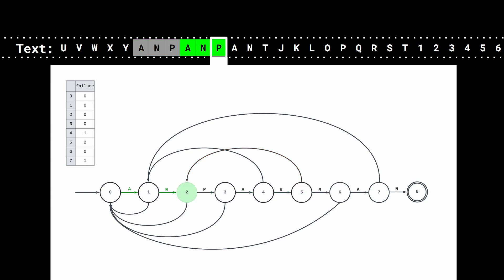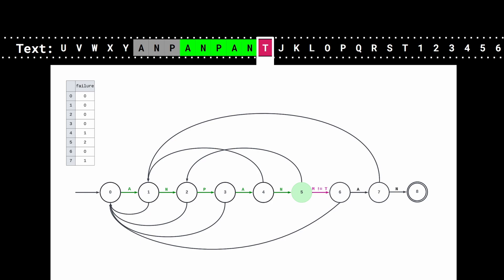Now in state 2, when we read a P, we go to state 3. We continue reading the text — we have the letters A and N, so we are back in state 5. But now we read a T. The comparison fails, so we follow the failure link. Now in state 2, we can't move forward because the comparison also fails. So we take the failure link of state 2, which goes back to state 0. When we reach state 0, there are no more transitions or failure links we can follow, so we just discard this character and read the next character in the text.